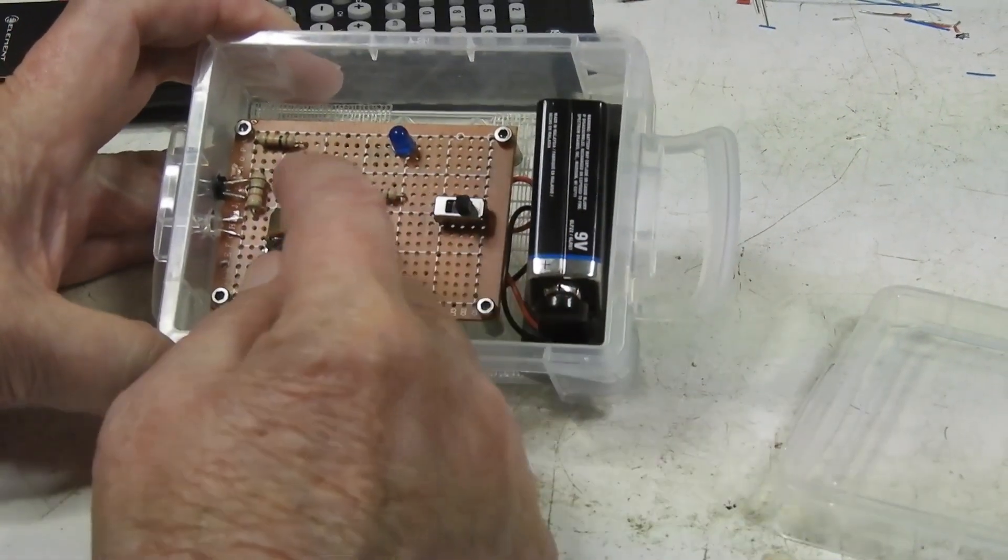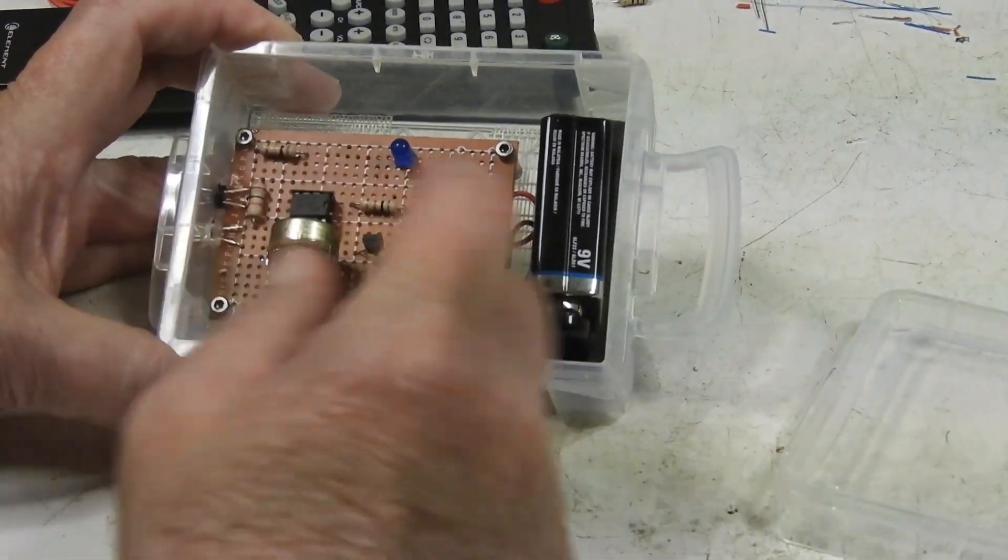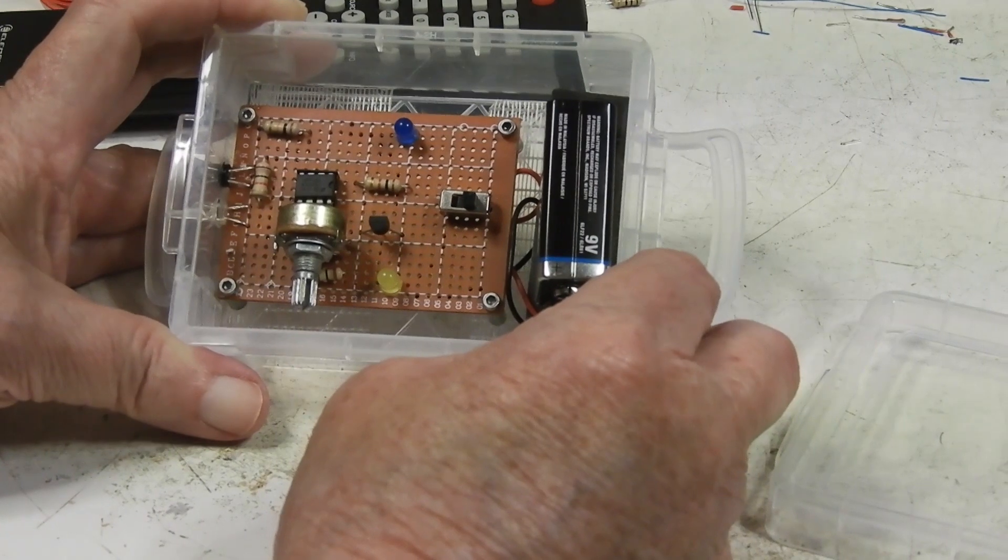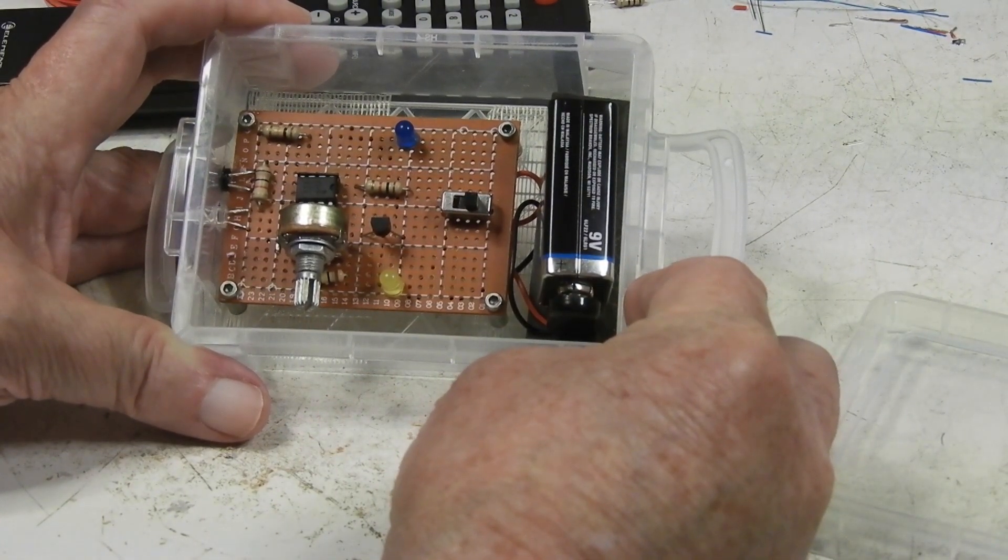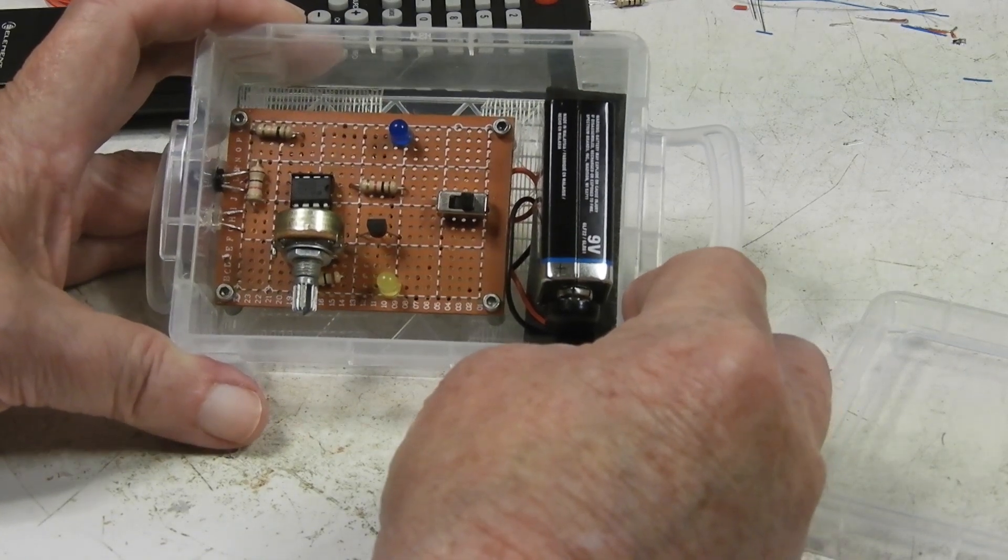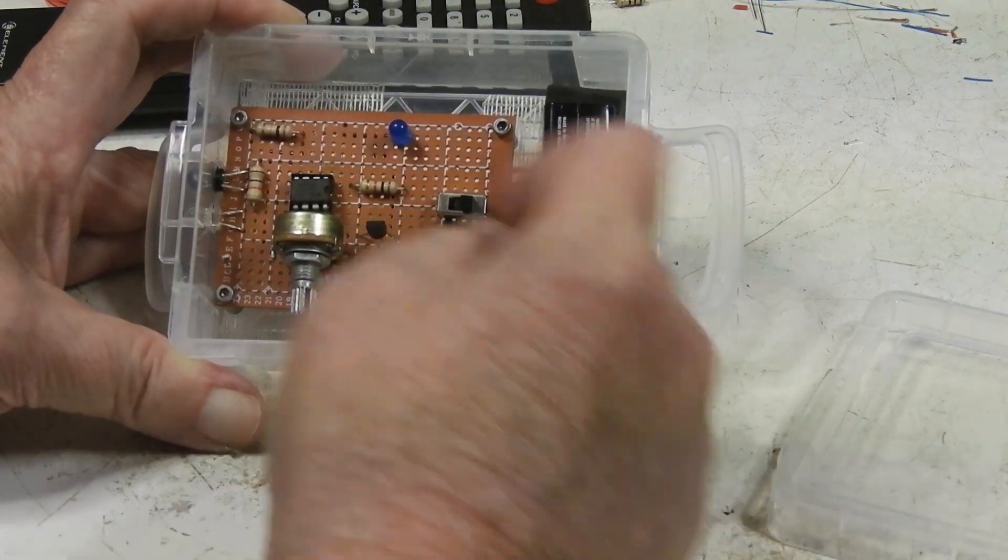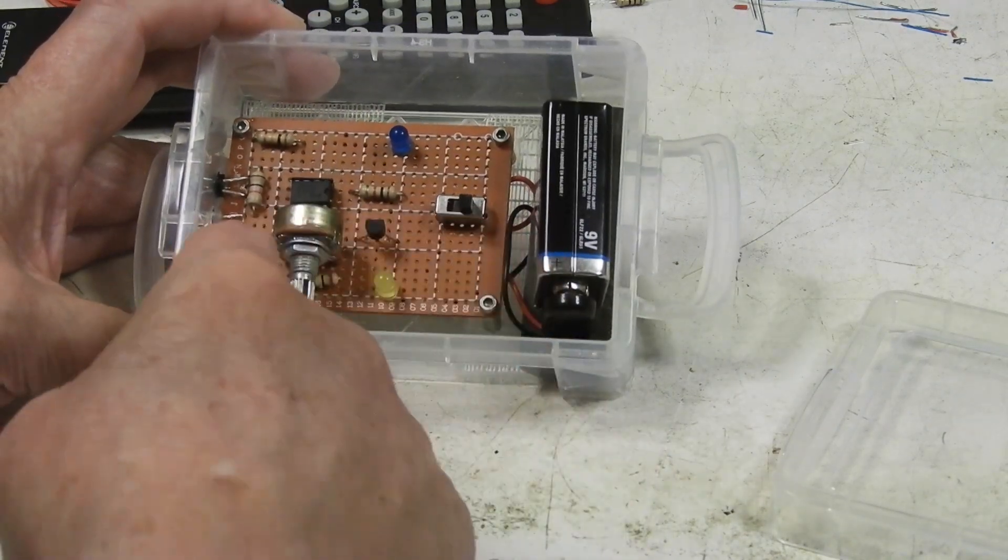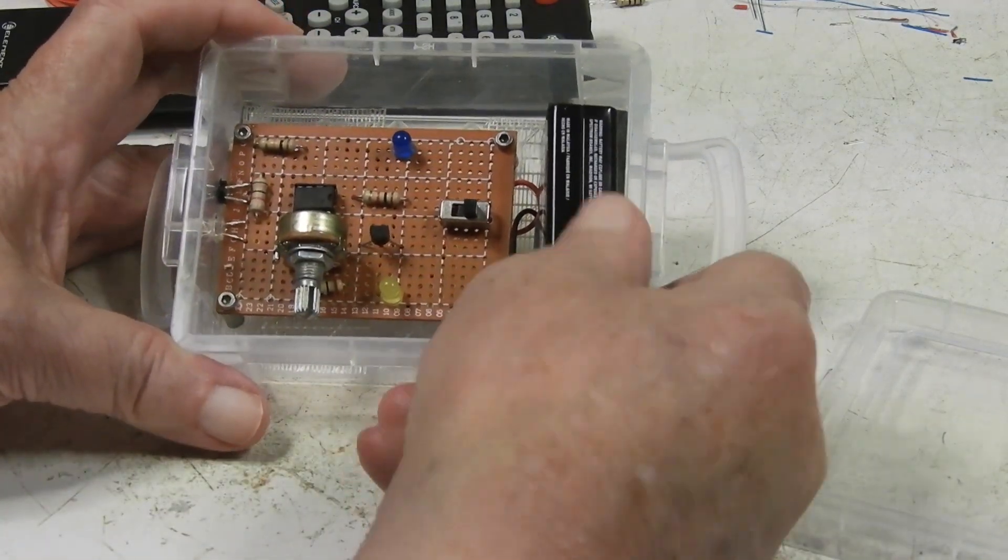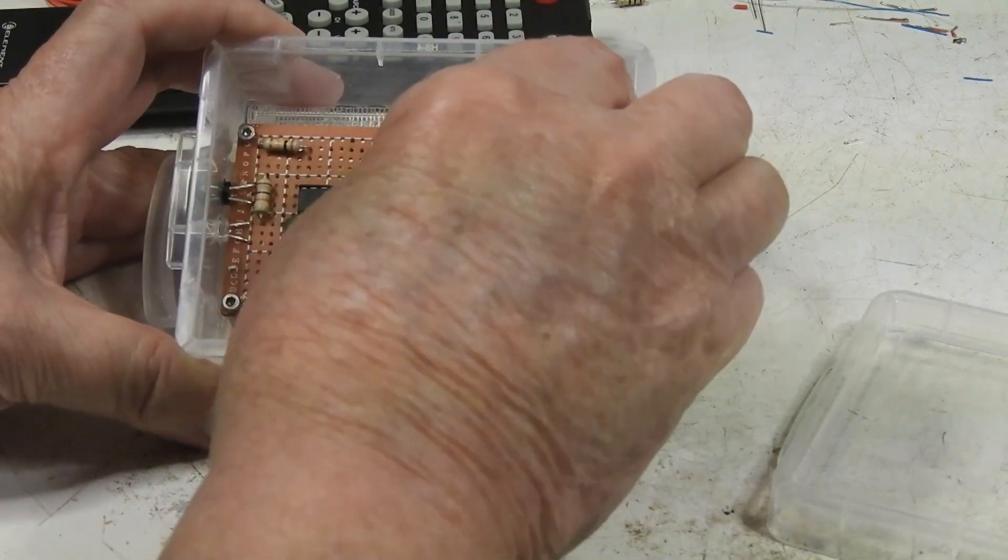I pushed that in, and when I was satisfied that I had it in correctly, I put a drop of superglue at the bottom of each standoff so it's not going to go anywhere. For the battery, I used—